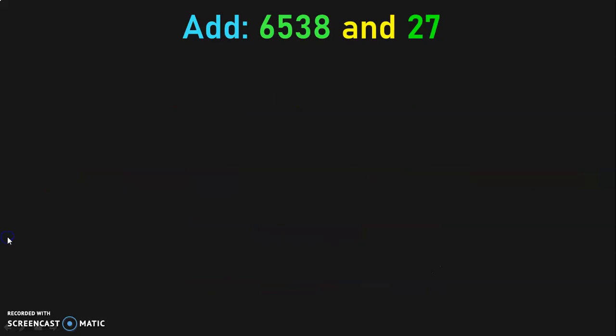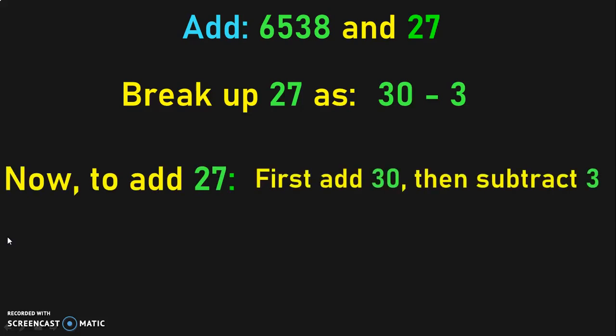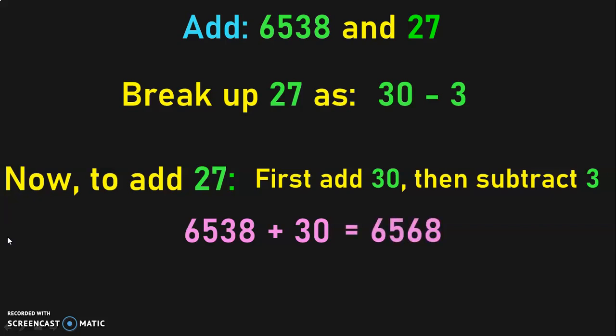Let us do another example for the same concept. Add 6538 and 27. The nearest tens to 27 is 30. So, we are going to break up 27 as 30 minus 3. To add 27, first you will have to add 30 to the given number and then subtract 3 from that answer. So, 6538 plus 30 gives you 6568. Next, subtract 3 from 6568 and you get the answer 6565.